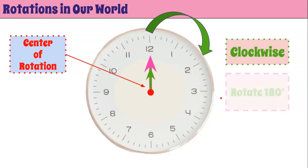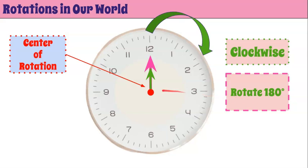Now let's talk about rotating 180 degrees. When we go 180 degrees we don't have to specify clockwise or counterclockwise because we end in the same location. Our angle of rotation is 180 degrees, which is two turns — one, two — and then we have it: 180 degrees.